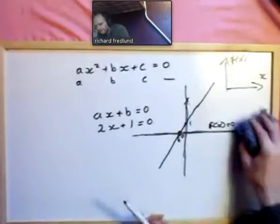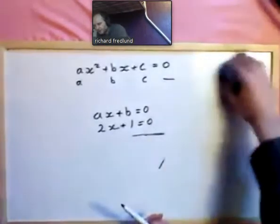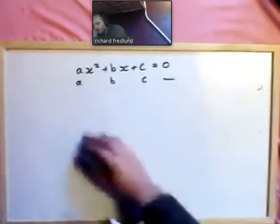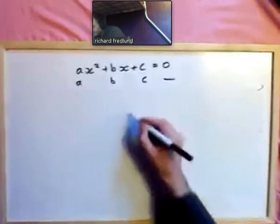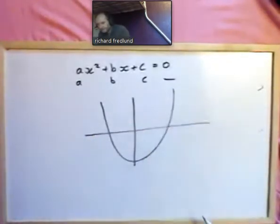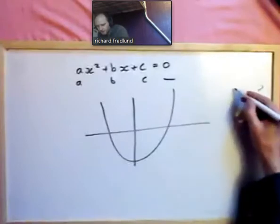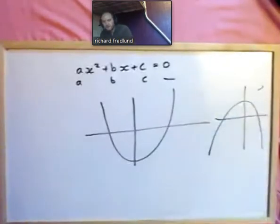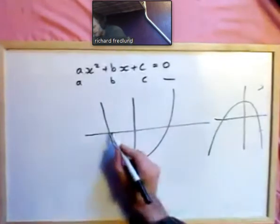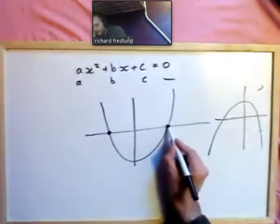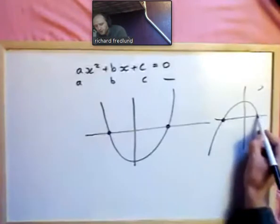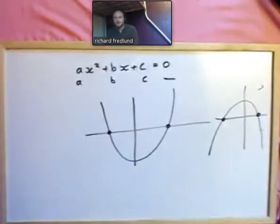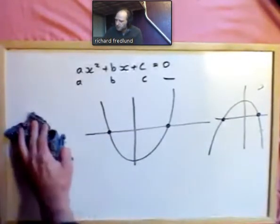For a quadratic equation, if we plot it, it will either look like a u-shape or an n-shape. Either way it's going to have two solutions, because it hits that zero line twice. That's why there are two solutions to a quadratic equation.